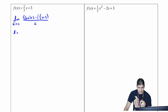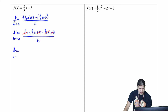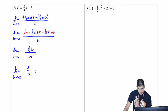Continuing, the limit as h approaches zero — I'll distribute the two-thirds — so I have two-thirds x plus two-thirds h plus three minus two-thirds x minus three, all over h. What nicely happens is the two-thirds x terms cancel and the positive and negative threes cancel. So I have the limit as h approaches zero of two-thirds h over h. Those h's divide out, leaving the limit as h approaches zero of two-thirds, which equals two-thirds.